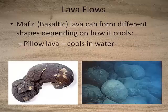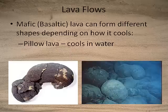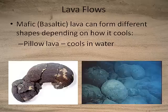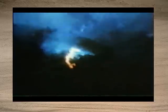Another type of basaltic or mafic lava shape is called pillow lava, which forms underwater. This is the type of lava we would see at a mid-ocean ridge or anywhere there's underwater volcanic activity. In an underwater eruption, the molten lava comes in direct contact with cold seawater and forms characteristic pillow-like shapes.